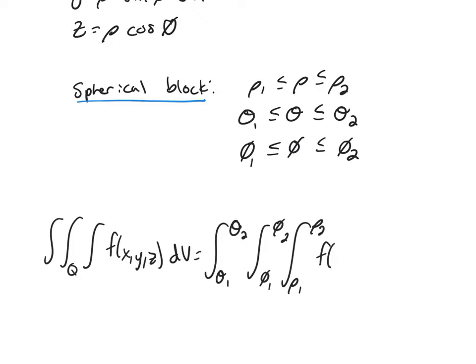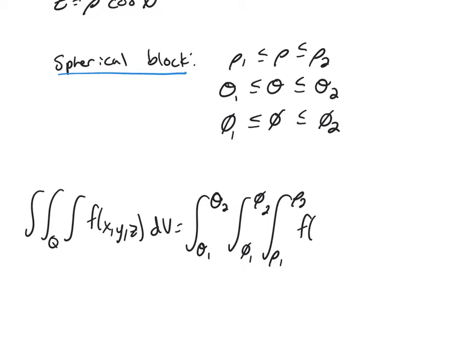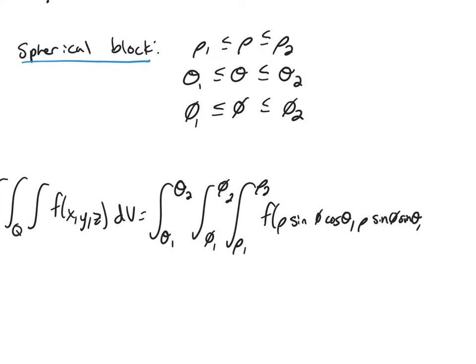And then you've got to change all your variables. So X is replaced by ρ sine φ cosine θ, Y by ρ sine φ sine θ, and Z by ρ cosine φ.